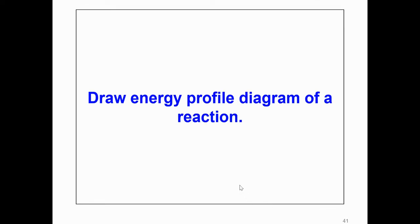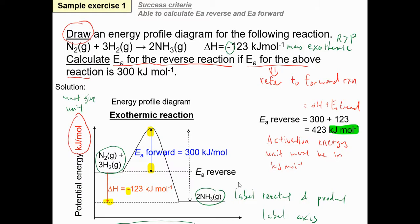Let's continue to draw an energy profile diagram of a reaction. The question asks to draw an energy profile diagram for the following reaction: nitrogen reacts with hydrogen to produce ammonia, with a negative enthalpy value. The second part is to calculate the activation energy (Ea) for the reverse reaction, given that the Ea for the forward reaction is 300 kilojoules per mole.